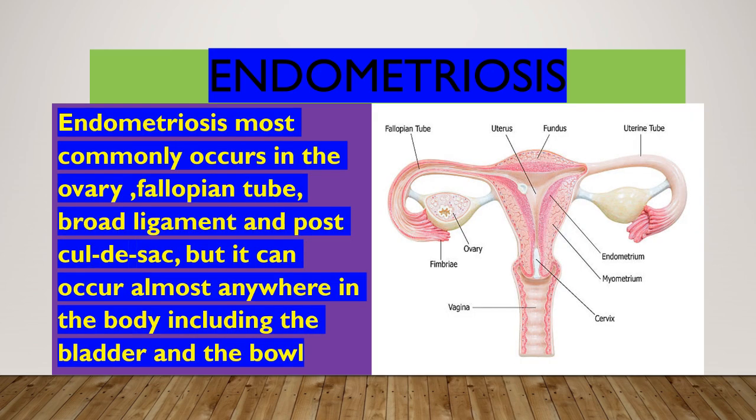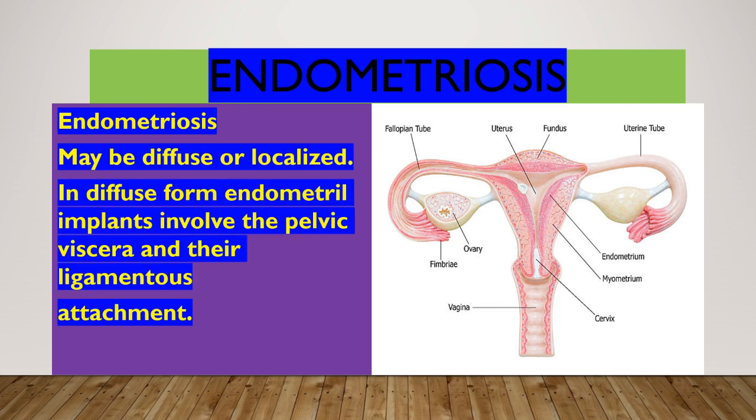Endometriosis most commonly occurs in the ovary, fallopian tube, broad ligament, and pouch of Douglas, but it can occur almost anywhere in the body including the bladder and the bowel. Endometriosis may be diffuse or localized. In the diffuse form, endometrial implants involve the pelvic viscera and their ligamentous attachments.